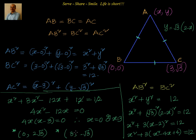We have two points because when forming an equilateral triangle, we can have vertex A above BC or below BC. So there are two valid positions for the third vertex, giving us two options.